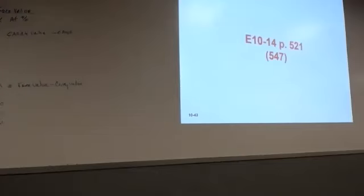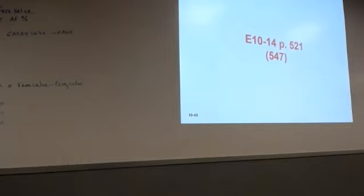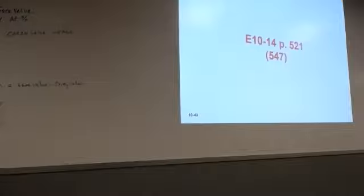All right, so we're going to do 1014 at page 5, 4, 2, 5, 21. Okay, 1014 says the situations presented here are independent of each other. The instructions say for each situation, prepare the appropriate journal entry for the redemption of the bonds. So there's an A and a B.